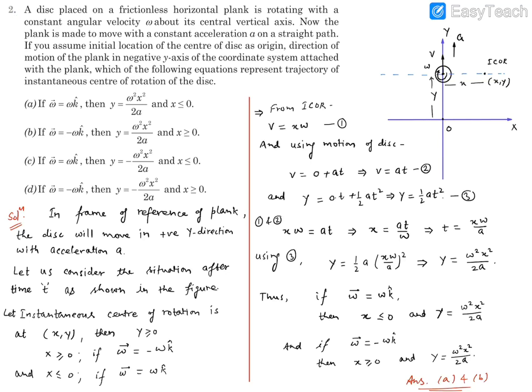Question number two reads: A disc placed on a frictionless horizontal plank is rotating with a constant angular velocity omega about its central vertical axis. Now the plank is made to move with a constant acceleration a on a straight path.